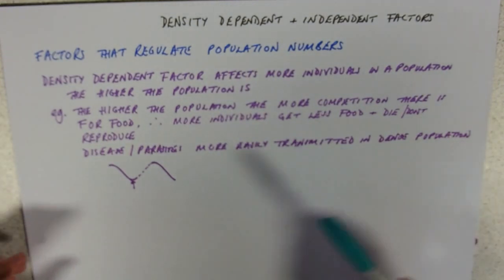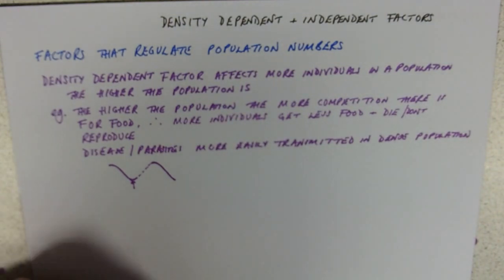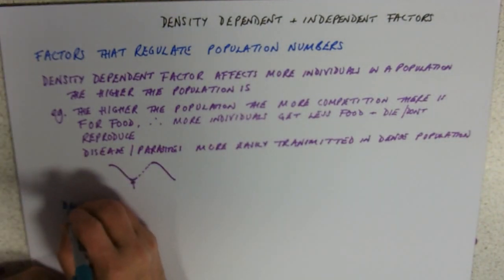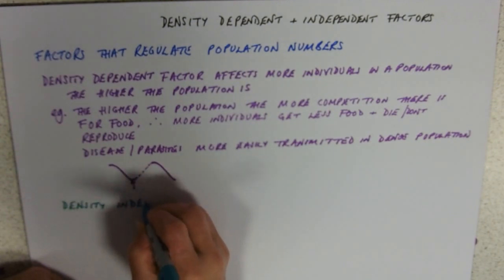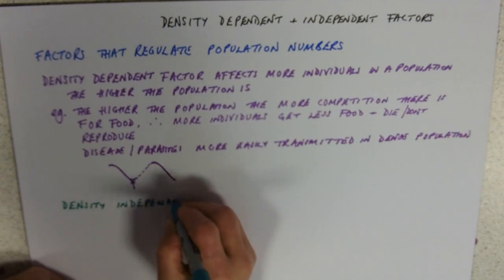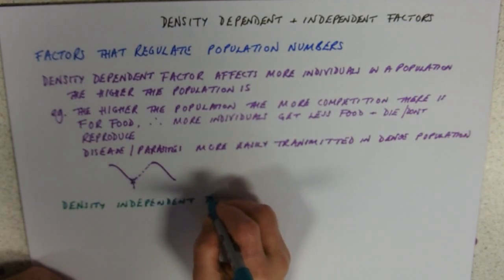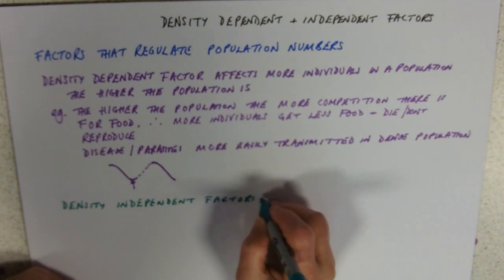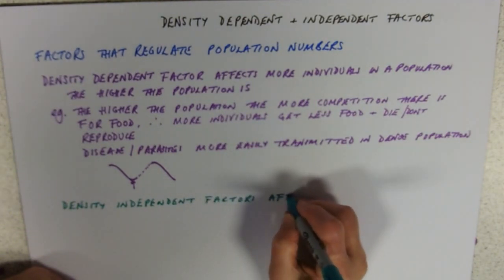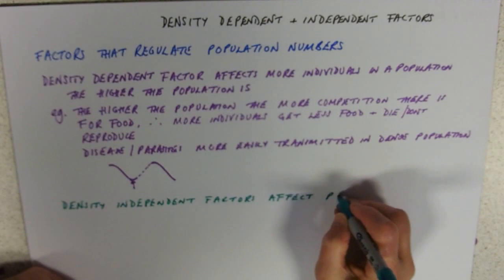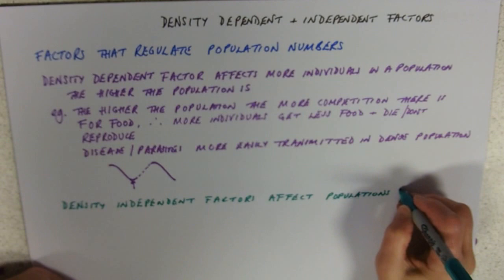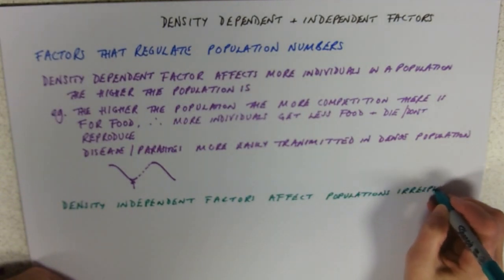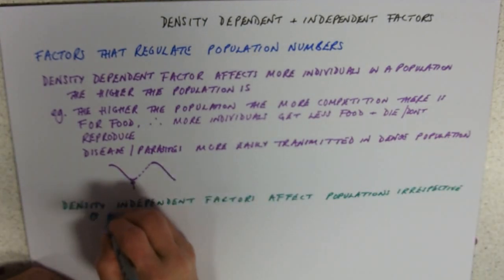So density independent factors affect populations. This is one that people tend not to get wrong, irrespective of population size.